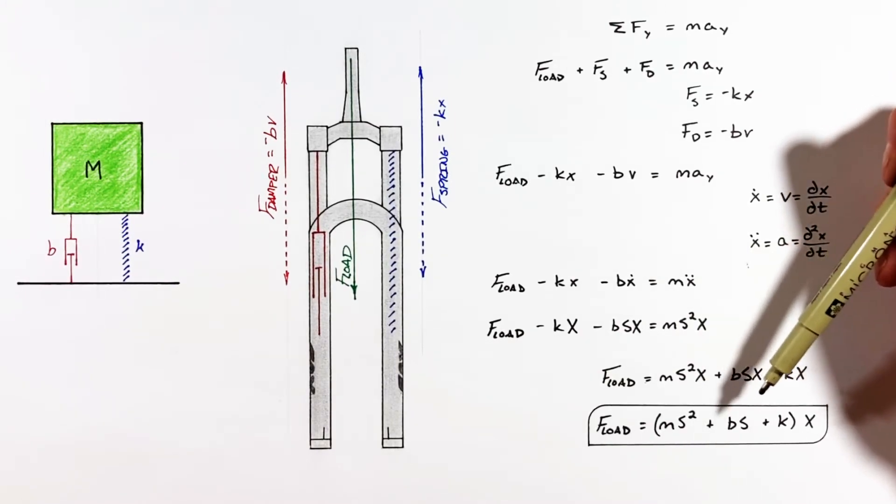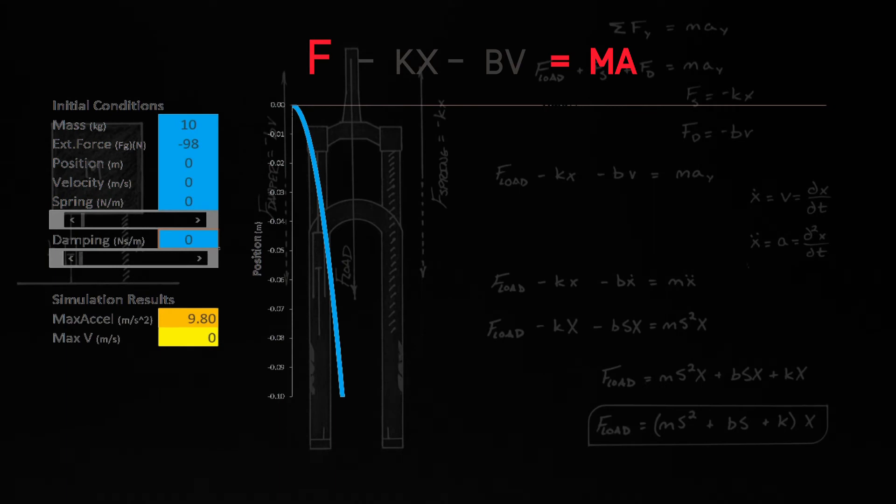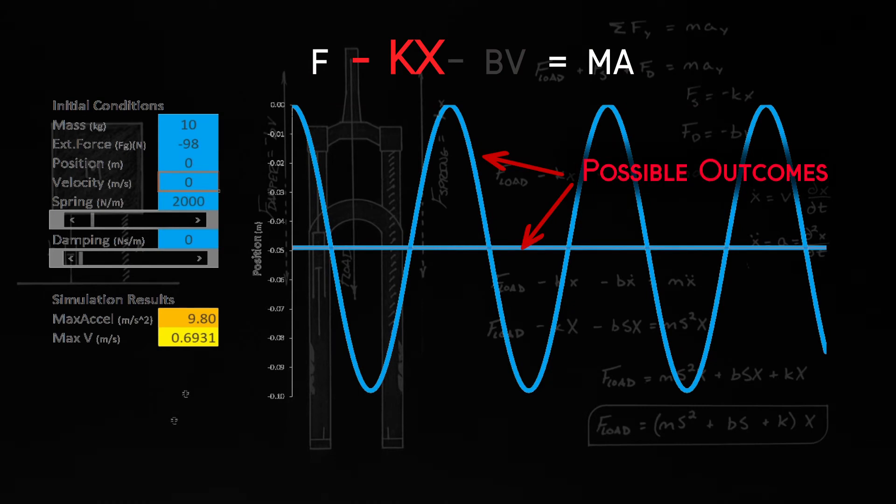All right, we're looking at a plot of position versus time for our mass. So starting with nothing other than our external force of gravity acting on the mass, we see free fall. Now if we put a spring in the way, one of several things can happen and those outcomes are entirely dependent on the initial conditions.